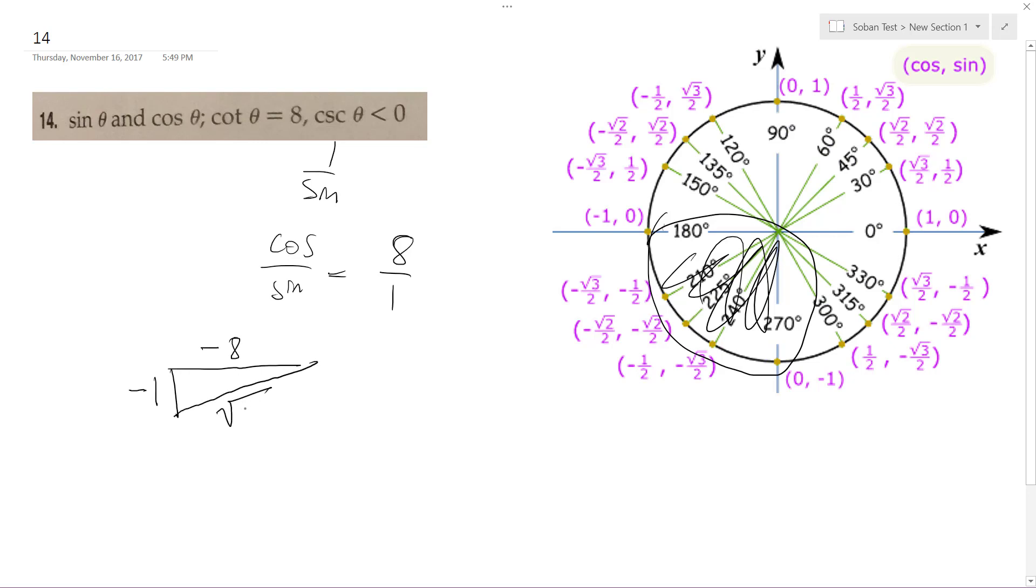So this is going to be equal to root 65, because it's 8 squared plus 1 squared. Sine of theta is going to be equal to negative 1 over the square root of 65, or if you rationalize the denominator, negative root 65 over 65.